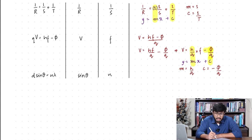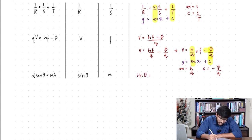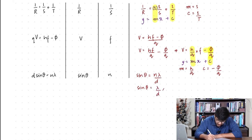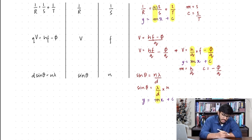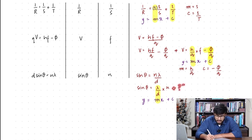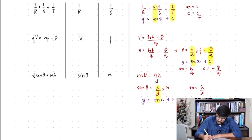Then: d sinθ equals nλ, with sinθ on the y-axis against n on the x-axis. Dividing both sides by d gives sinθ equals nλ/d, which rearranges to (λ/d)·n. Comparing with y equals mx plus c, the gradient is equal to λ over d and there is no y-intercept because nothing is written afterwards, so the y-intercept equals 0.